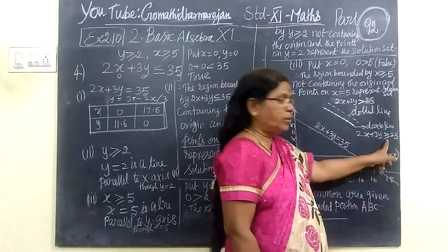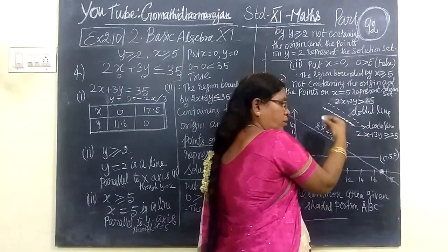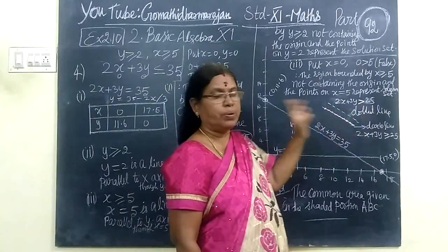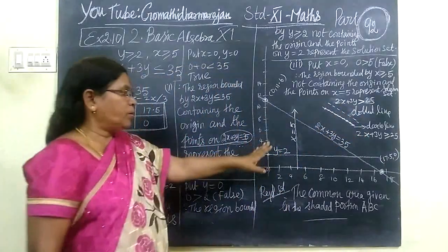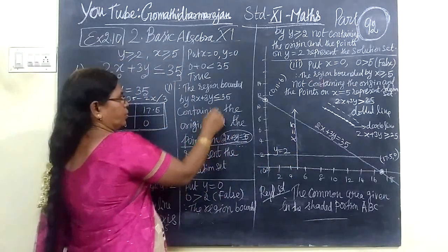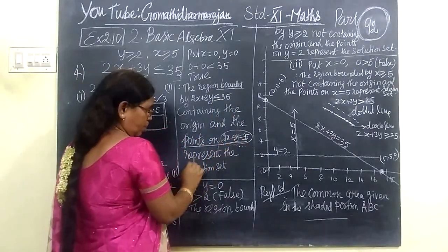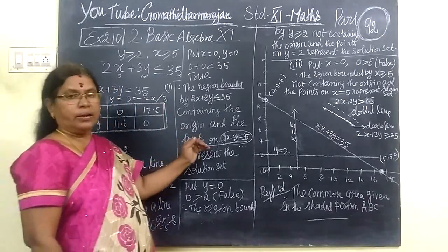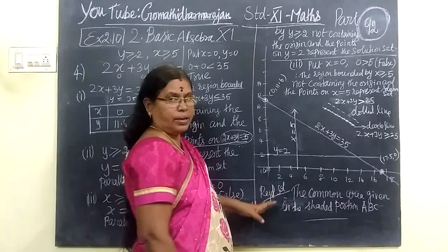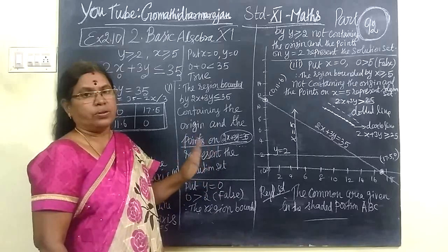But greater than or equal to inequality means this is one of the thick lines. In the line, all the points will form the solution set as well. The dark line is the thickest line, and the points represent the solution. The region as well as the points from the line represent the solution set.